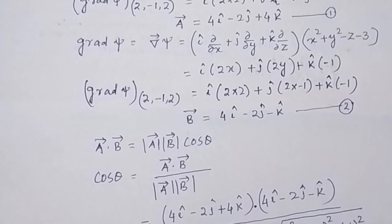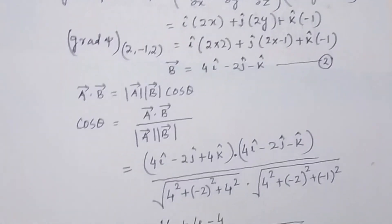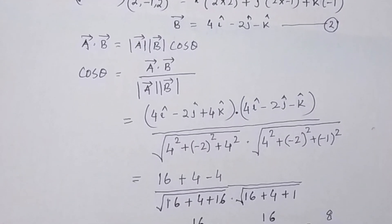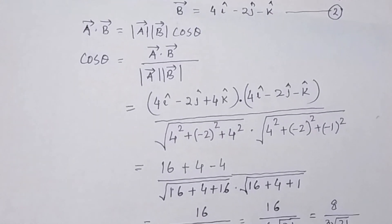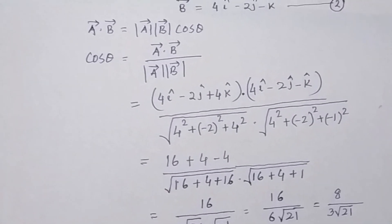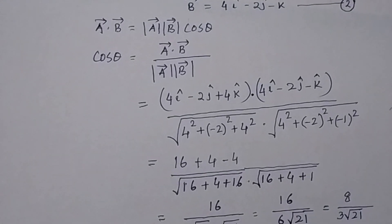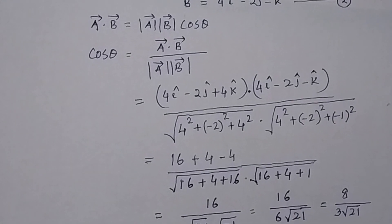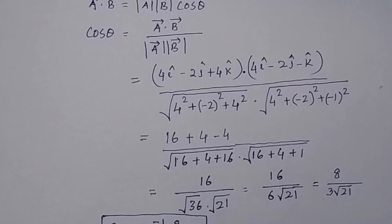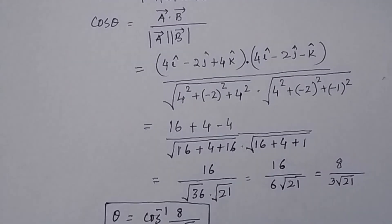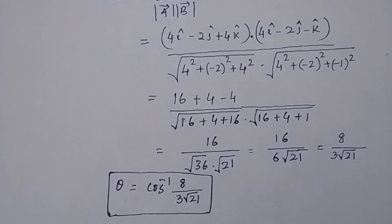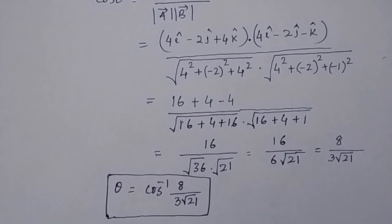After finding the two vectors, we use the formula: A · B = |A| |B| cos θ. From that formula we can find cos θ, and then find θ, the angle between the two vectors.